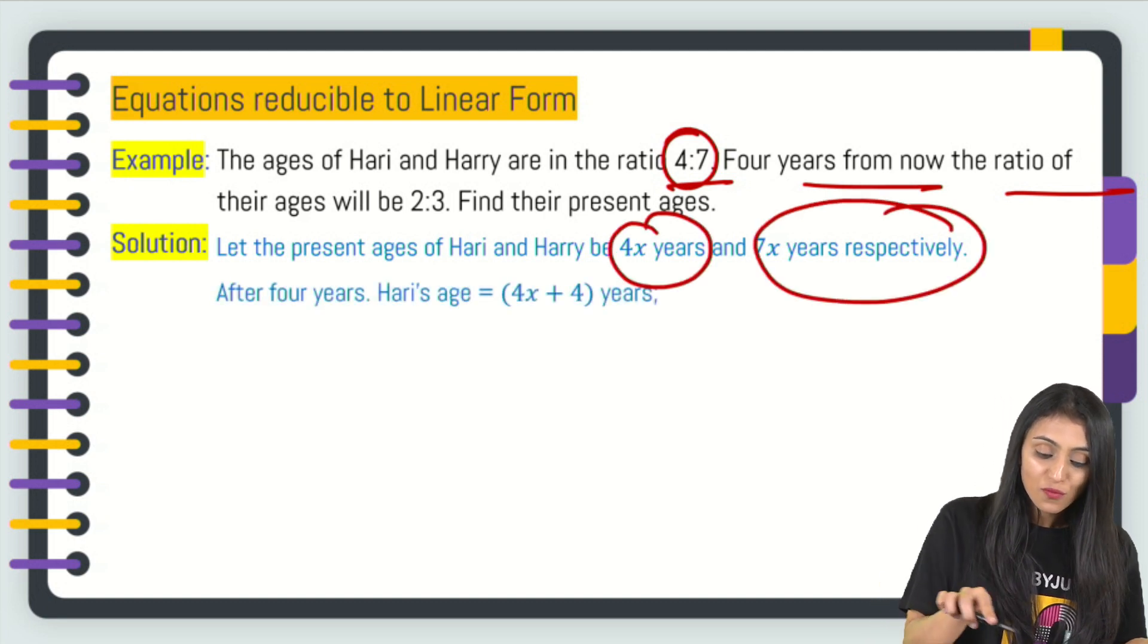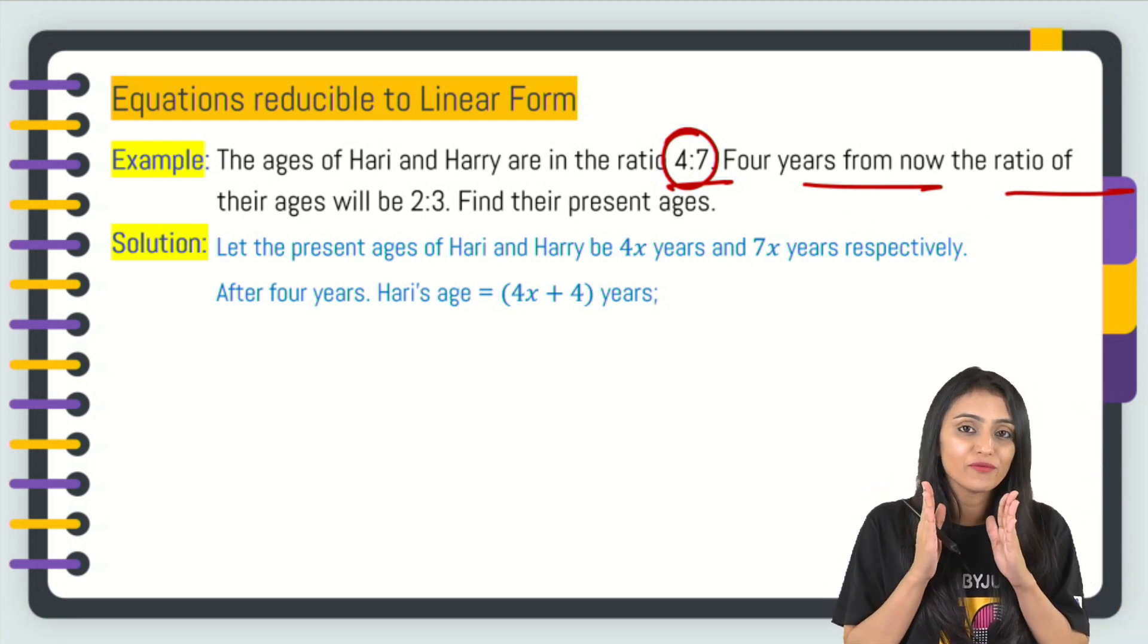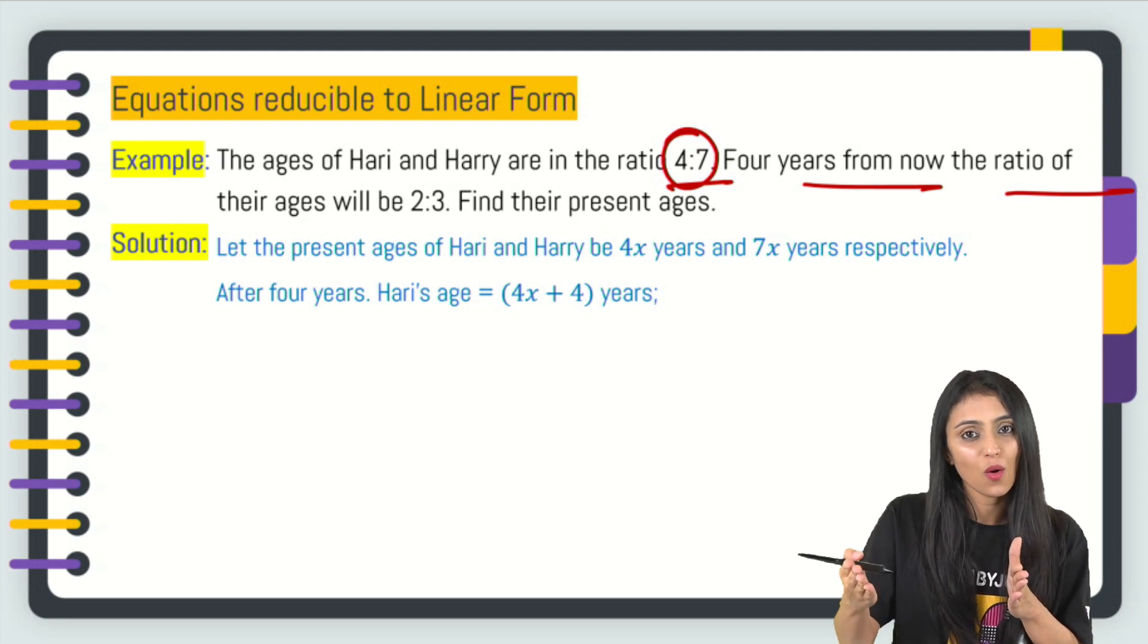So let's suppose their present ages are 4x years and 7x years respectively. Four years from now, what is it going to be? I'll simply add 4 years to it. Let's suppose right now if you're 12 years old, so 4 years from now you're going to be 16. I'm just going to add 4 to it.